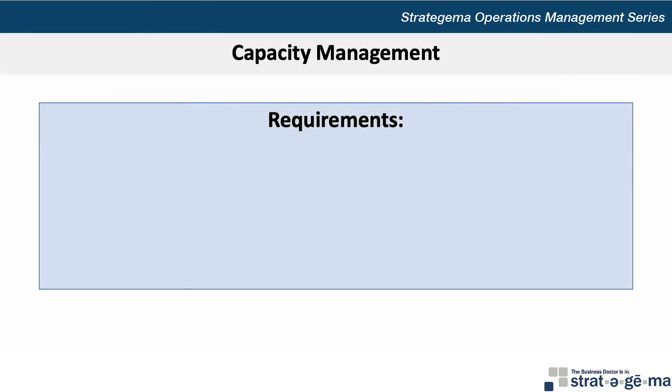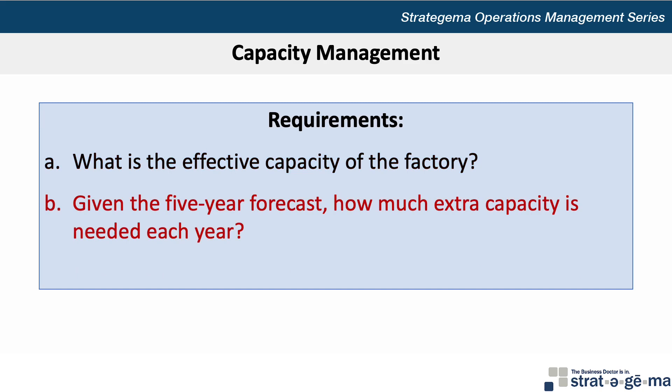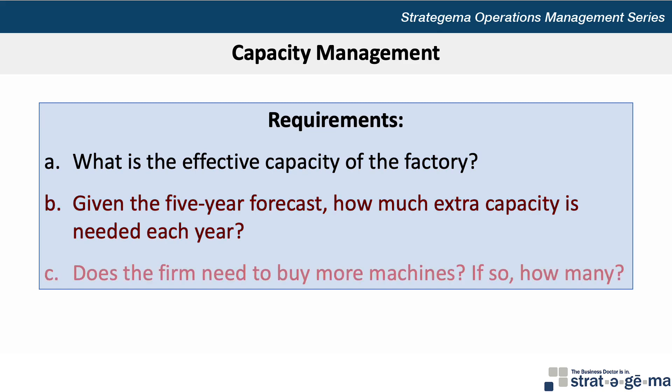There are three requirements for this problem. First is to determine the effective capacity of the factory. Second, given the five-year forecast, we want to determine how much extra capacity is needed in each year. And third, does the firm need to buy more machines? And if so, how many?